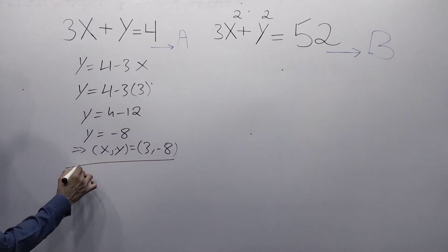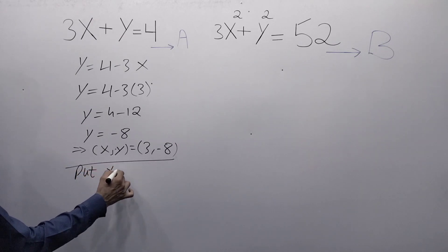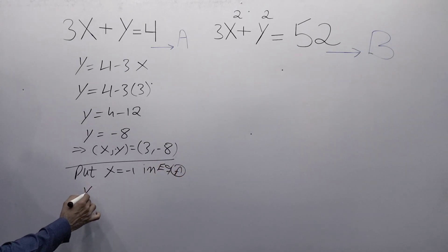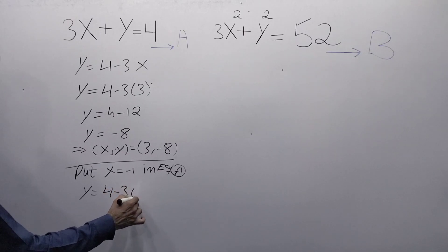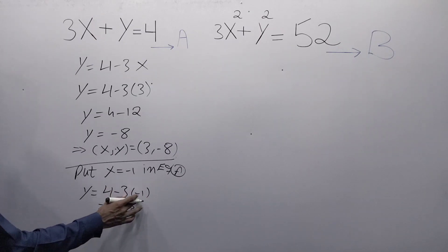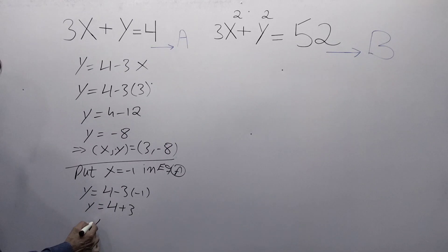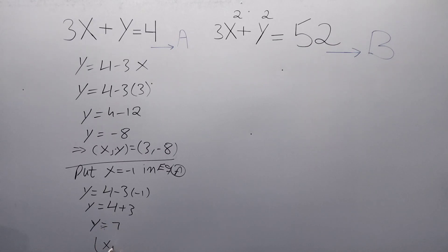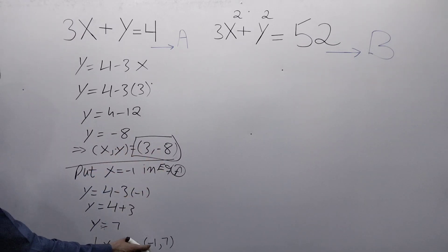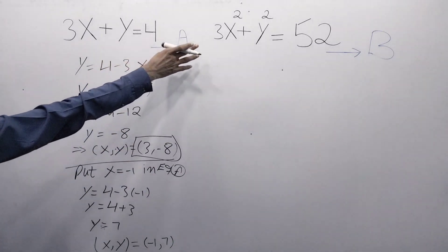Now putting x equals minus 1 into equation A: y equals 4 minus 3 times (minus 1), so y equals 4 plus 3, which gives y equals 7. So the second solution point is x equals minus 1 and y equals 7. Therefore, the solution set of equation A and equation B is (x, y) = (3, minus 8) and (x, y) = (minus 1, 7).